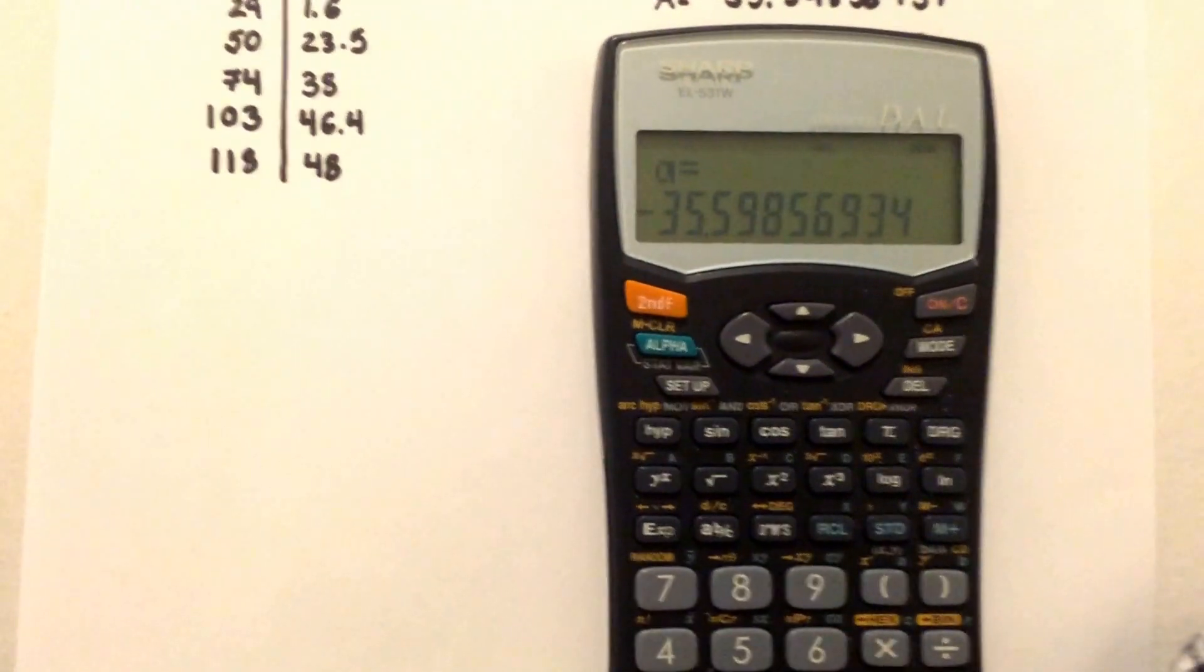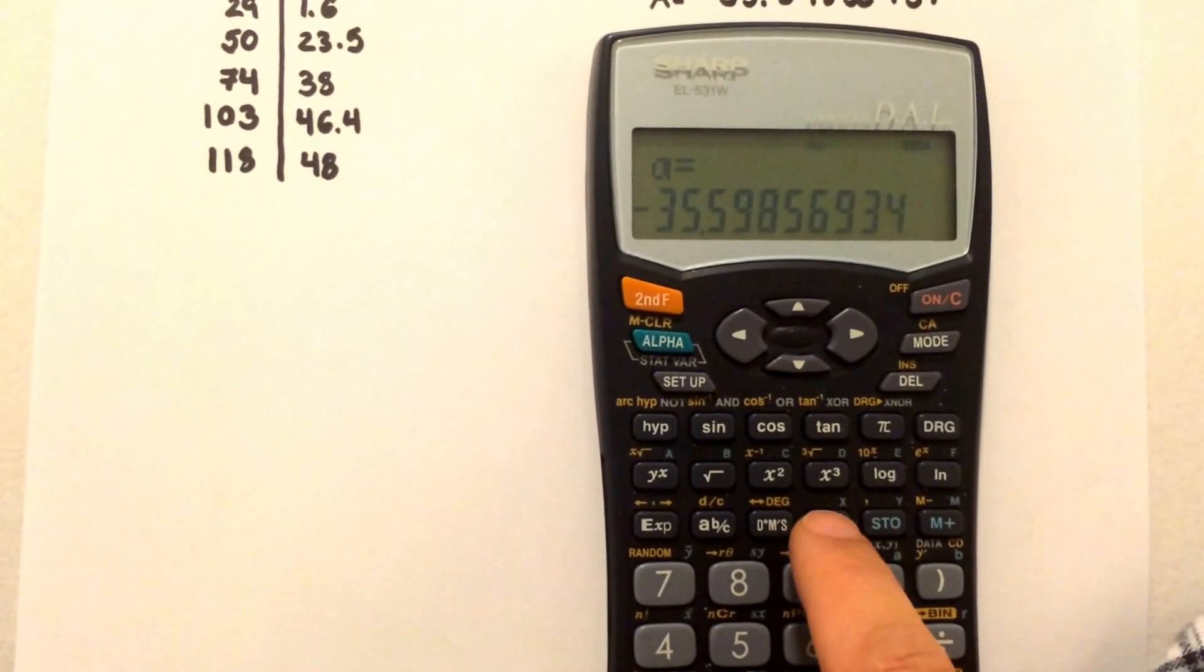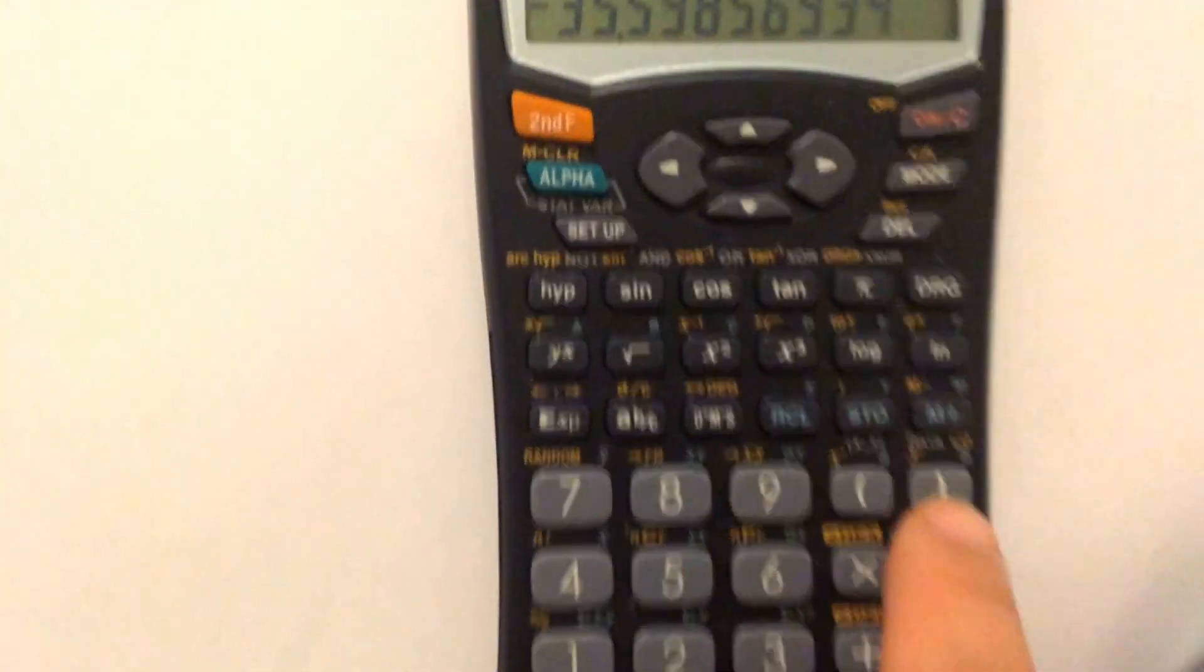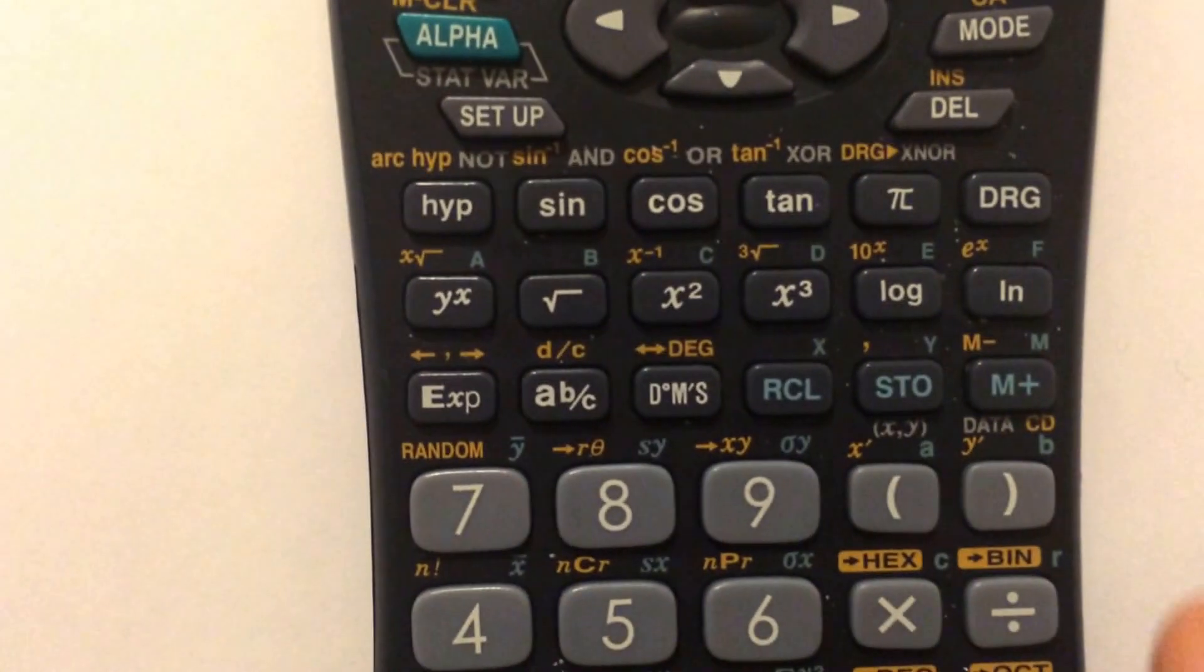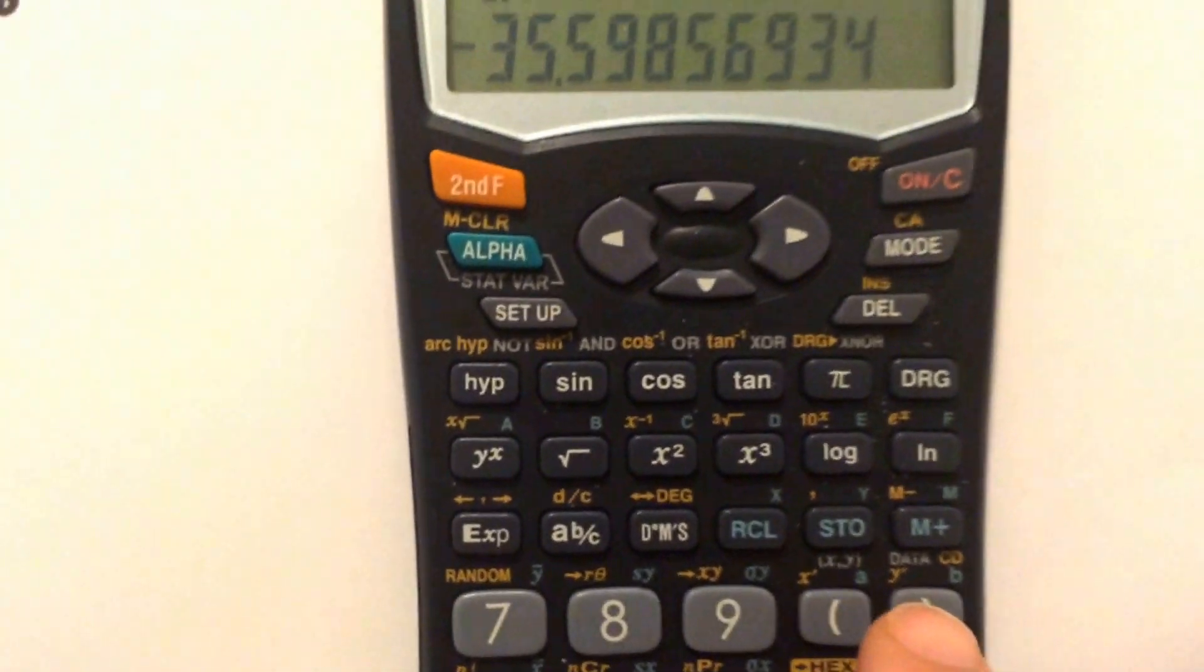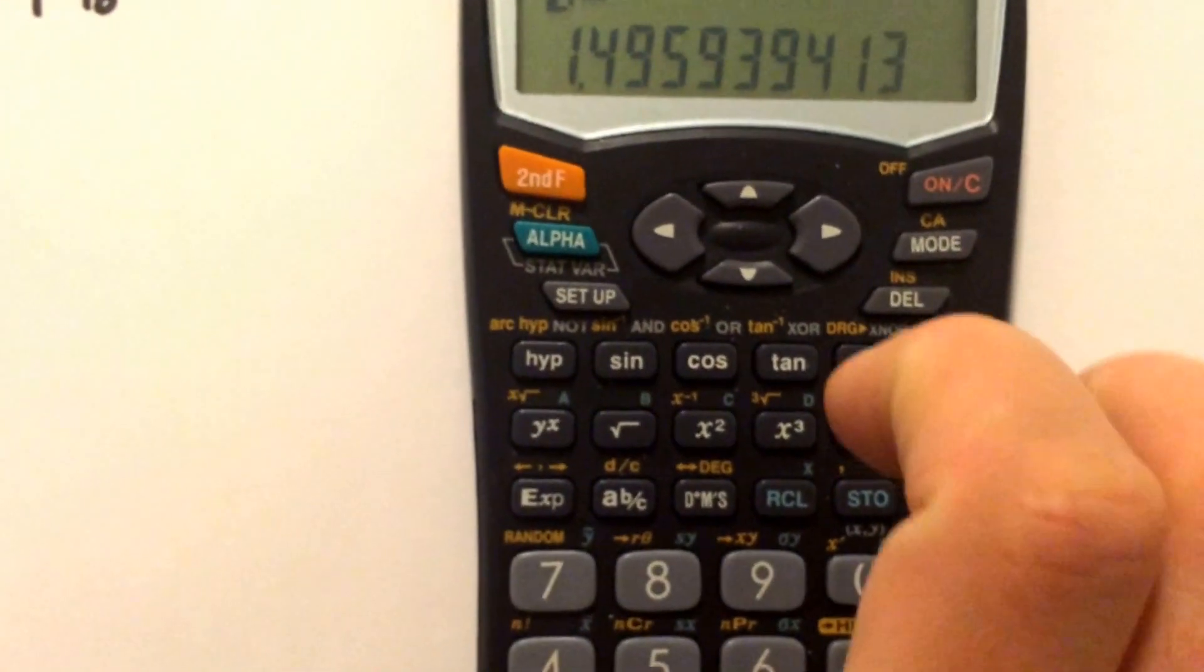And then you hit, again, recall, RCL, right beside your STO, and the B. So you'll see the A and B are on top of the bracket. So the A is on top of your open bracket, and your B is on top of your close. So select that, and there you have your B value.